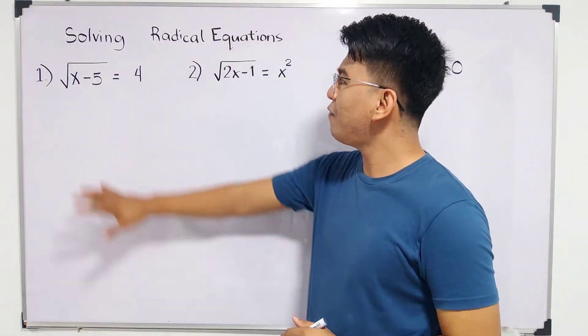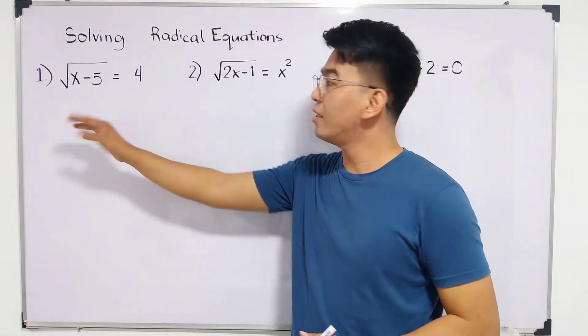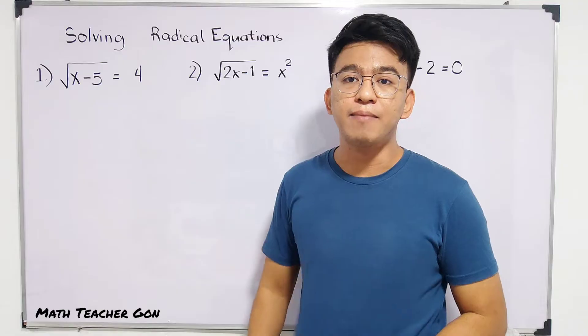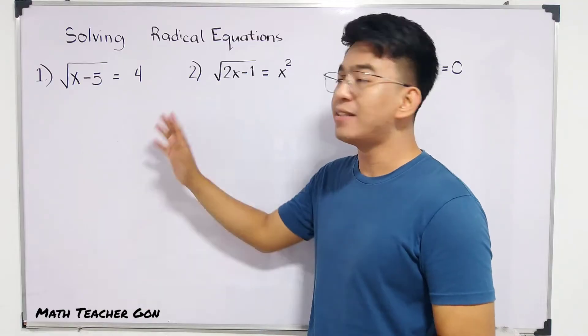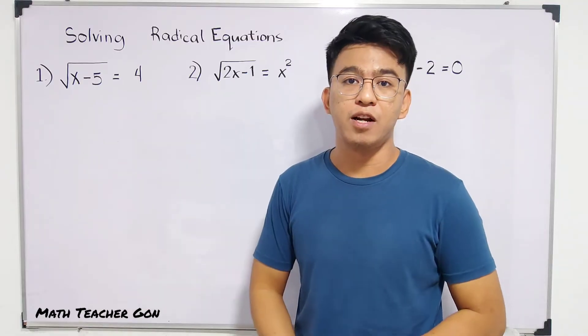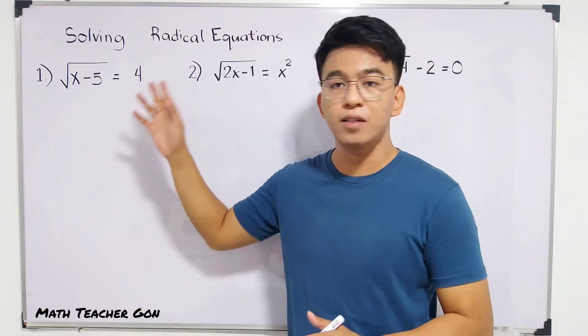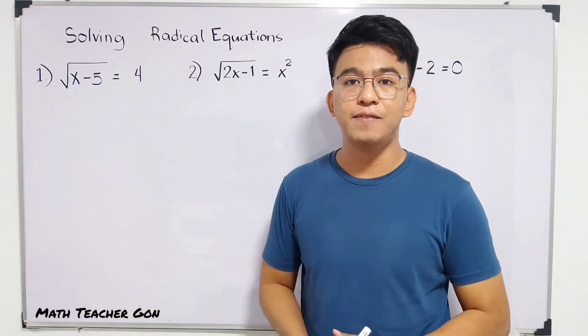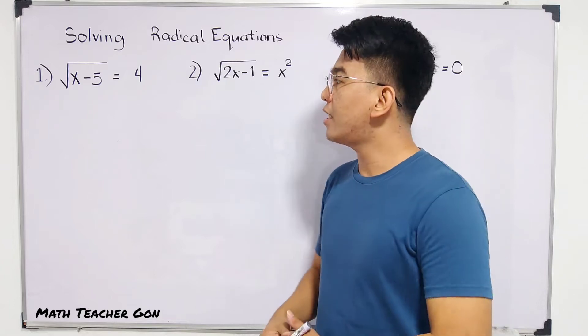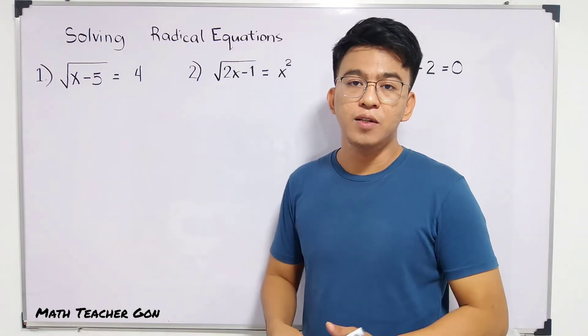So we have here number one: the square root of x minus 5 is equal to 4. Again, the square root of x minus 5 is equal to 4.